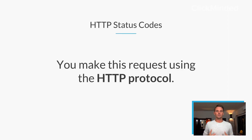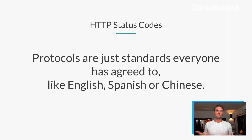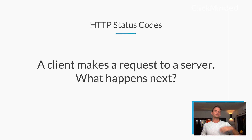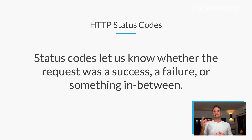You make this request using what we call the HTTP protocol. Protocols are really just standards that everyone on the internet has agreed to — it's no different than English or Spanish or Chinese. It's a language that we've all agreed to. A client makes a request to the server — what happens next? Status codes let us know whether the request was a success, a failure, or something in between. That's what an HTTP status code is.